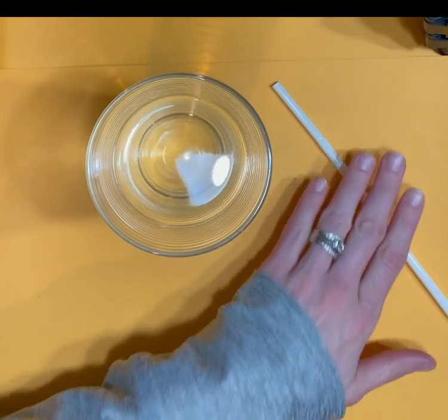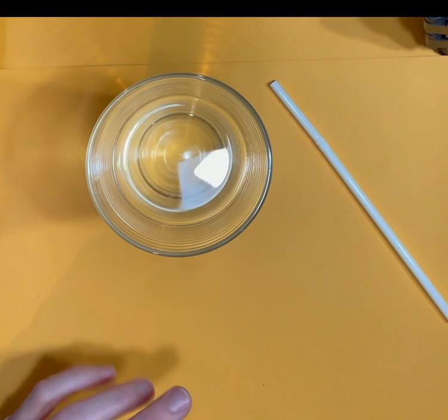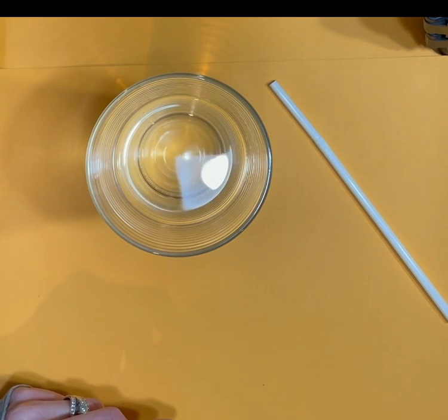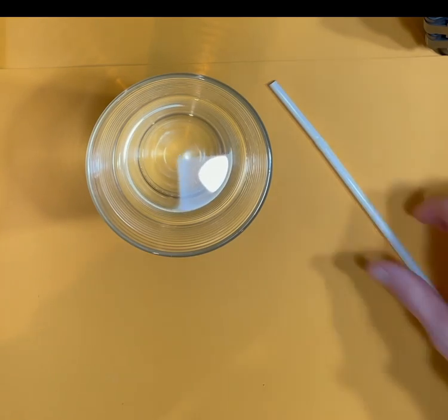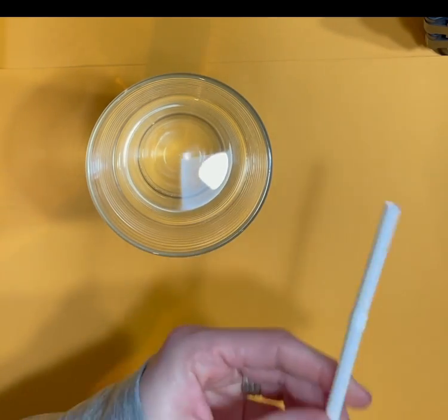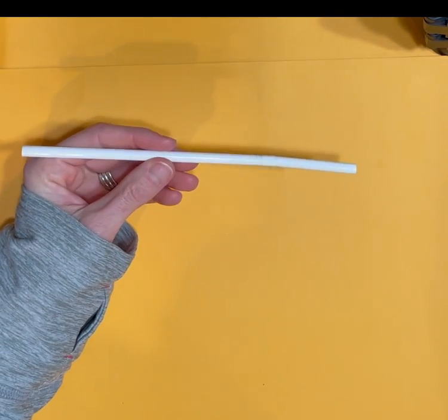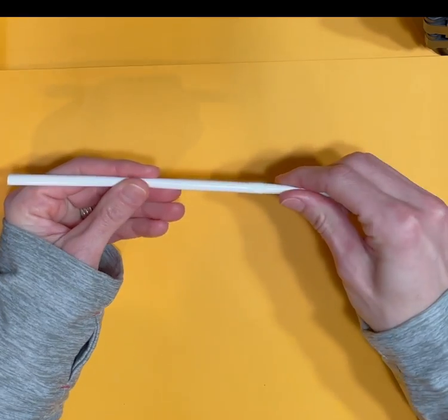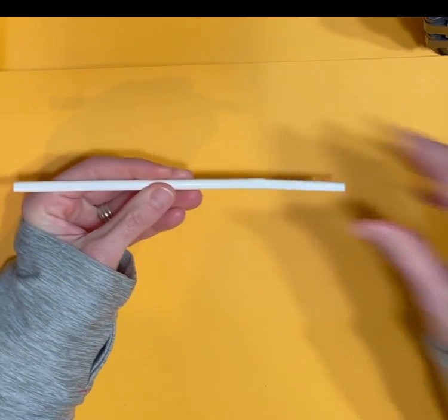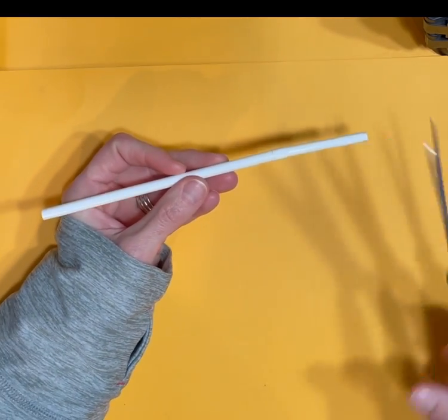If you can't get your straw to work properly, there's a way we can fix it to make this project work. So what we're going to do is with the straw, you're going to want to cut it about a third of the way down. Mine happens to be a bendy straw but it's still going to work.